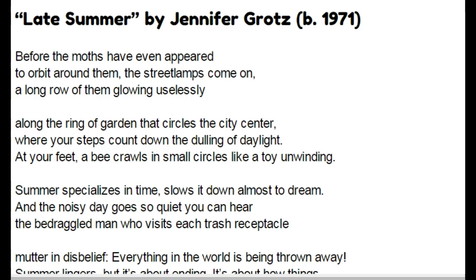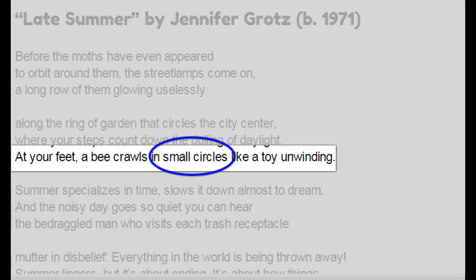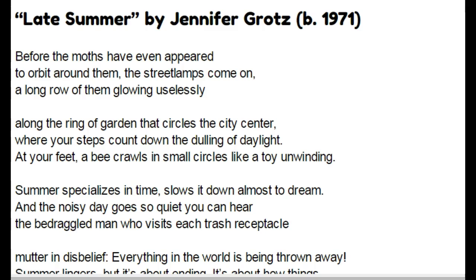So the image of the circle is reinforced by the repetition of that sound. Is that reinforced anywhere else in the poem? Look at the third line of the second stanza: 'At your feet a bee crawls in small circles like a toy unwinding.' When I look at this poem and I see the repetition of that S sound and then I see it repeated again in the phrase 'small circles,' it feels like the poet is saying, 'Hey, this was on purpose — do you see what I see?' Because this poem isn't just about a bee and street lamps, it's about the image.